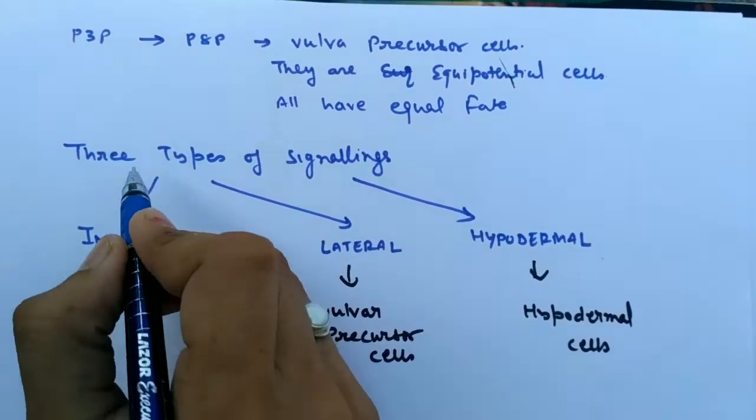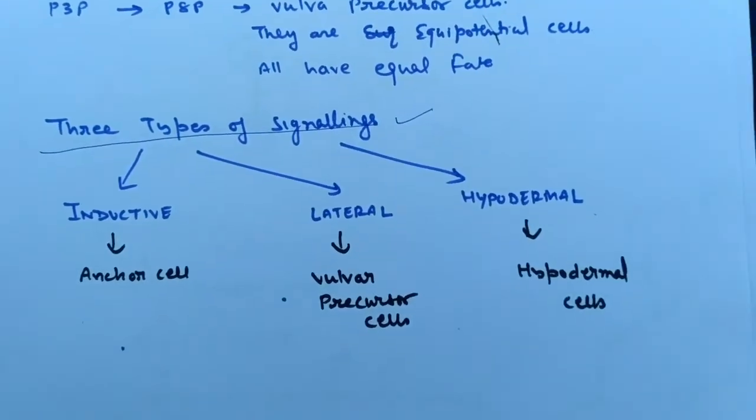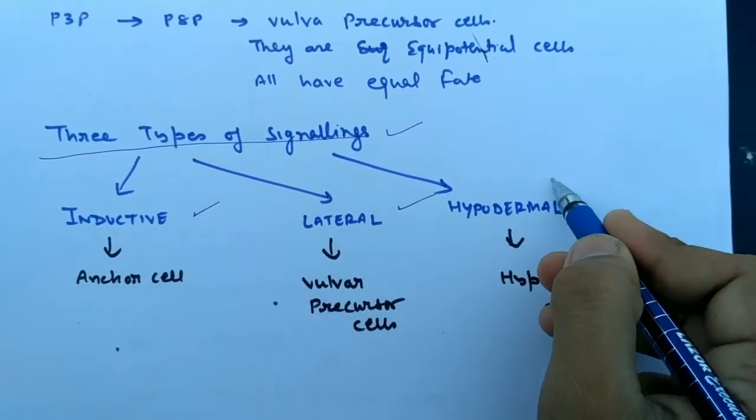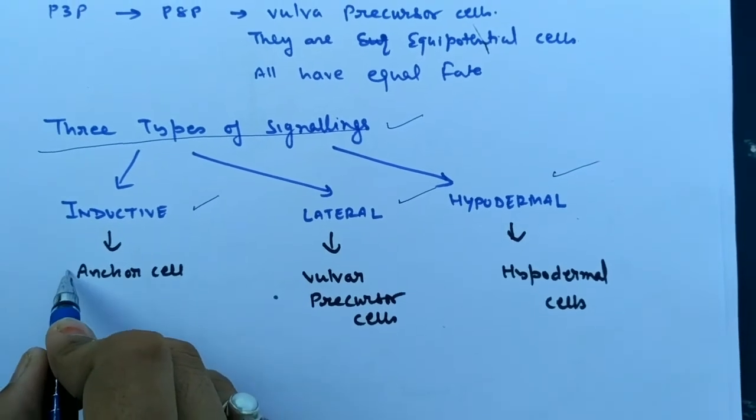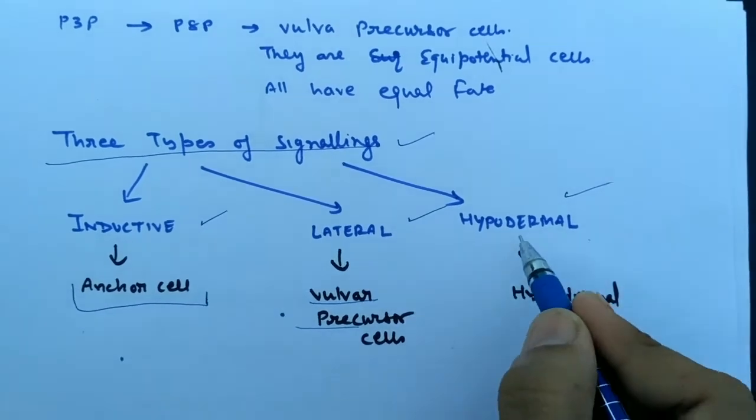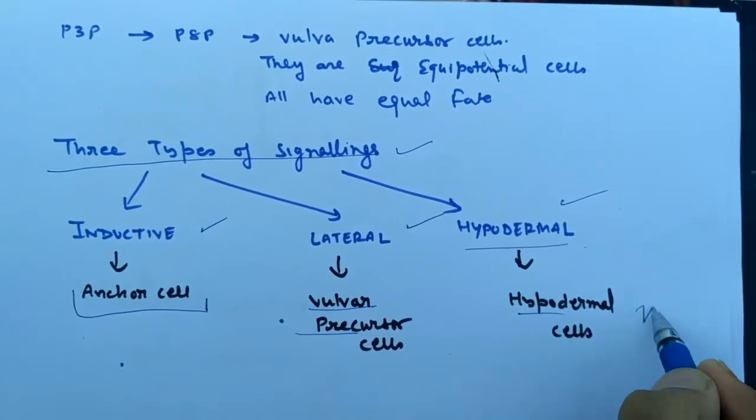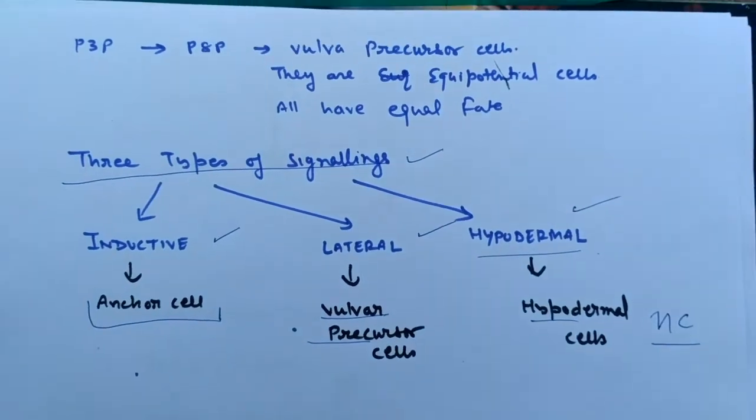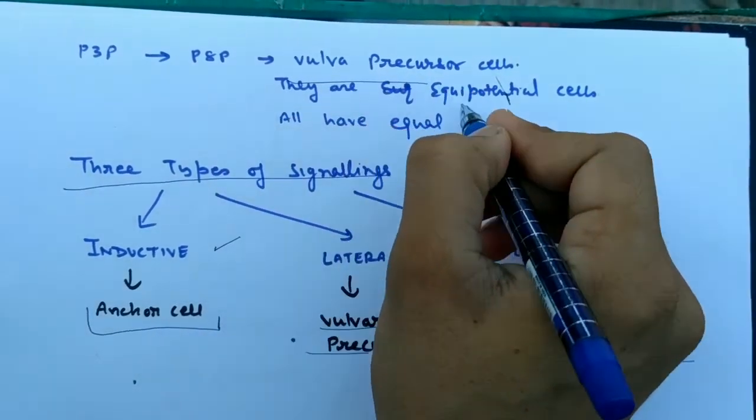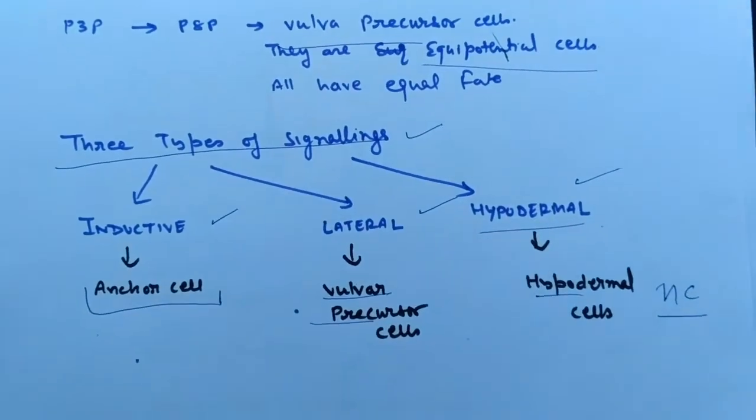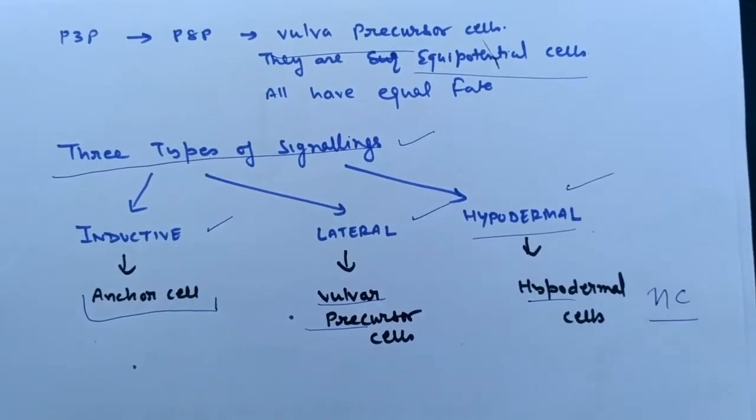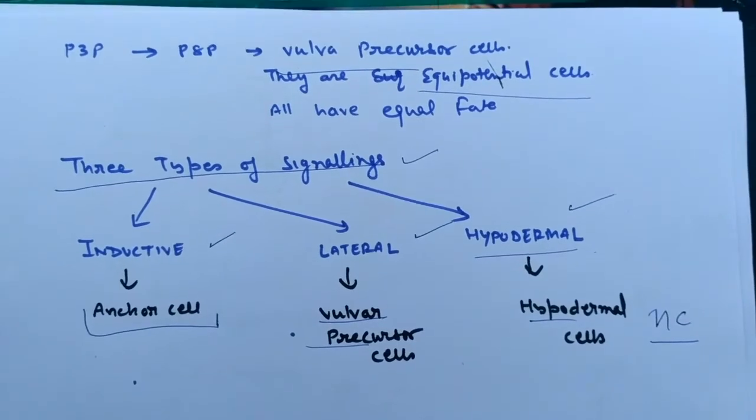Next is the signaling. Here are three types of signaling that are sent in vulva formation: inductive signaling, lateral signaling, and hypodermal signaling. Inductive signaling is sent by the anchor cell, lateral by the vulva precursor cells, and hypodermal signaling by the hypodermal or HC cells. All the P3P up to P8P cells are vulva precursor cells and are equipotential cells, meaning they can form vulva from any type, but the occurrence of the anchor cell is main.